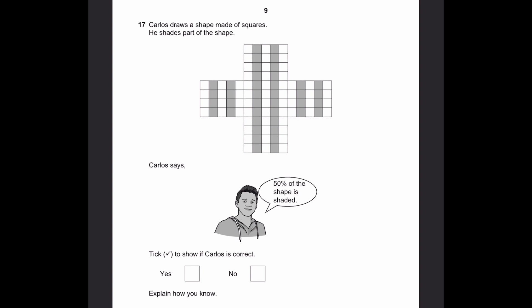Question 17. Carlos draws a shape made of squares. He shades part of the shape. Carlos says 50% of the shape is shaded. Tick to show if Carlos is correct, yes or no. Explain how you know. Well, the answer is actually no.